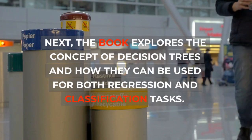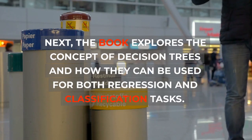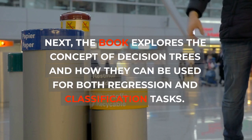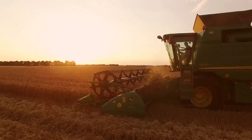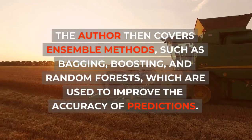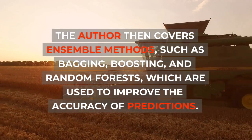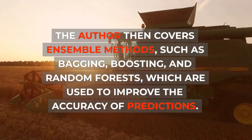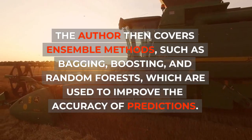Next, the book explores the concept of decision trees and how they can be used for both regression and classification tasks. The author then covers ensemble methods, such as bagging, boosting, and random forests, which are used to improve the accuracy of predictions.